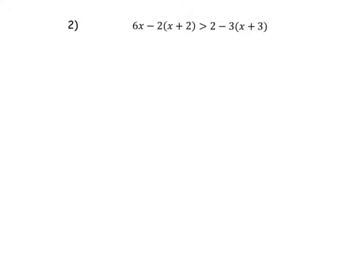Okay, this is a little more involved because of the parentheses, distributive property, and we have to combine like terms. First, get rid of the parentheses by distributing. Don't touch the 6x. Negative 2 times x, negative 2 times positive 2, greater than symbol, the two stays. We're only distributing the negative 3. Negative 3 times x, negative 3 times positive 3.